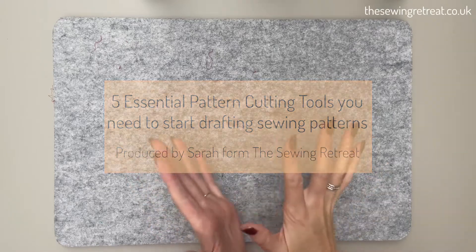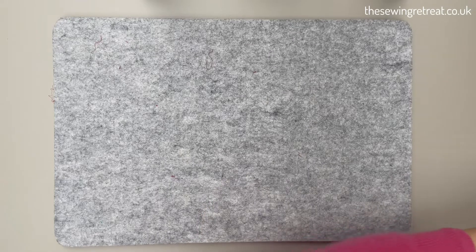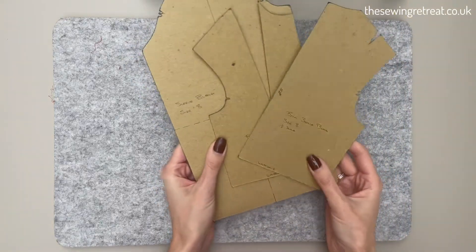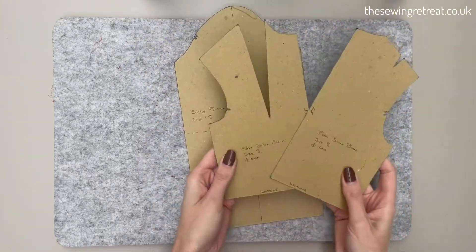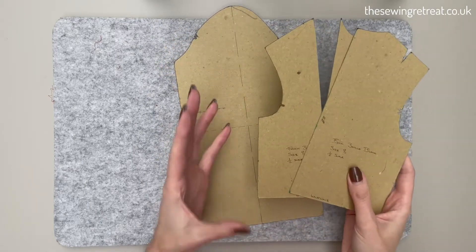There are five things you need to start creating your own sewing patterns. The first thing is your pattern blocks. These are stencils for creating your own sewing patterns, and there are lots of different ones depending on what garment you're making and what size and shape you are.